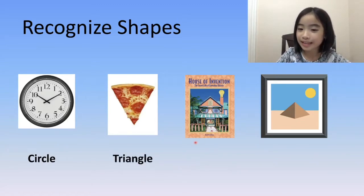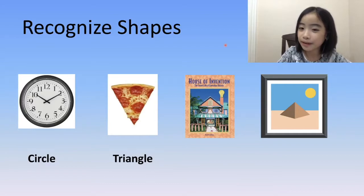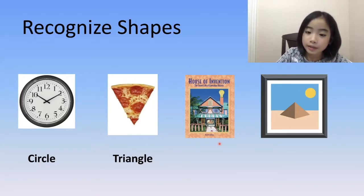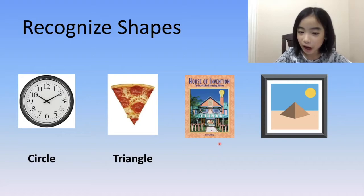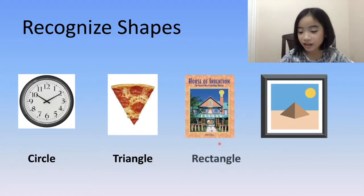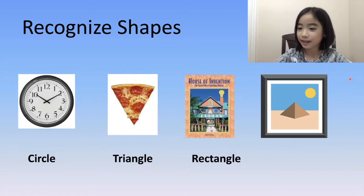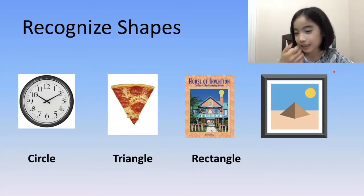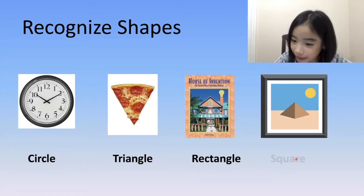And the next one is a book. A book is a shape called a rectangle. And the next one is a picture. This picture is a square.